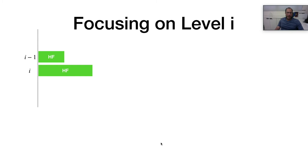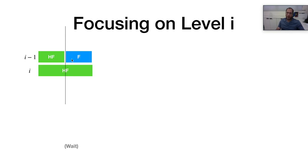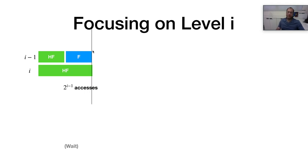Now let's take a look at the life cycle of level i and level i-1. This line represents a timeline. Remember that on each table of size n, we can accommodate only n lookups, and after n lookups it must be rebuilt. Thus, after 2^(i-1) accesses, level i-1 cannot be accessed anymore and we must rebuild it. The rebuild is expensive and we have to wait. At this point, level i-1 is rebuilt and we can accommodate another 2^(i-1) accesses. Then we must rebuild both level i-1 and level i, which is again expensive.